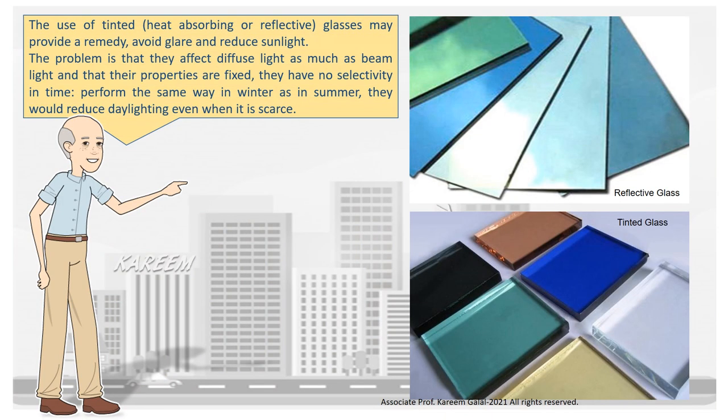The use of tinted, heat-absorbing, or reflective glasses may provide a remedy, avoid glare, and reduce sunlight. The problem is that they affect diffuse light as much as beam light and that their properties are fixed — they have no selectivity in time. They perform the same way in winter as in summer, and would reduce daylighting even when it is scarce.